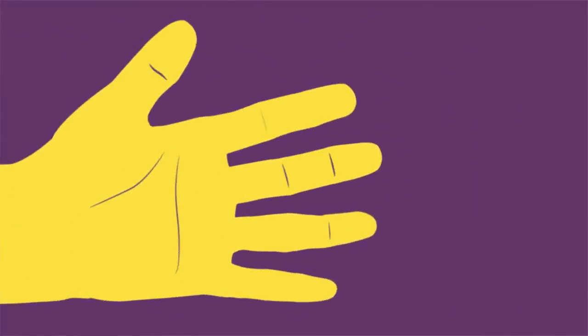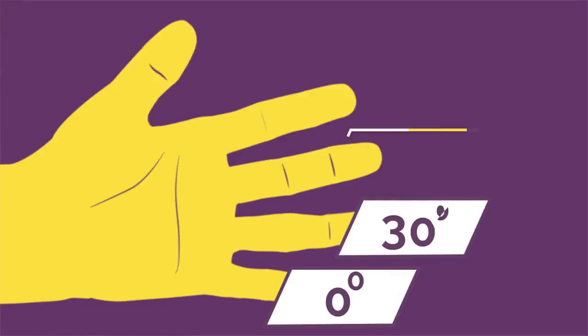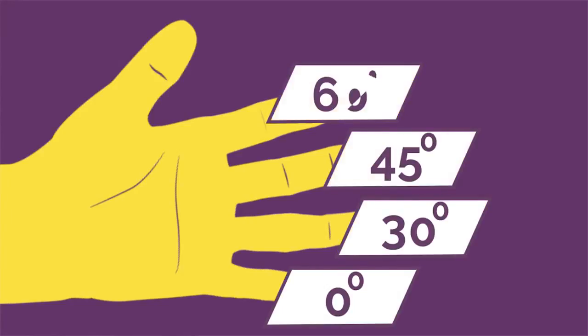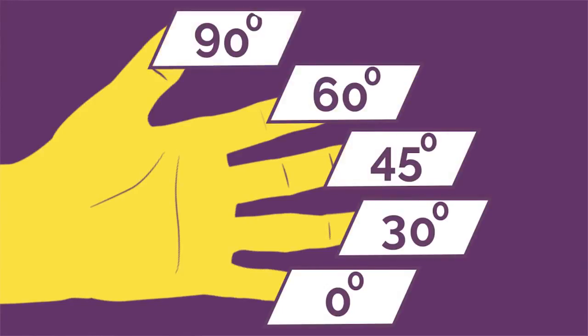Stand with your palm facing towards you and label your little finger as 0 degrees, your ring finger is 30, middle one is 45, 60 and your thumb is 90 degrees.